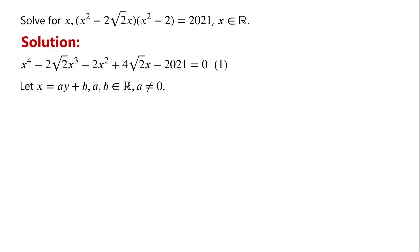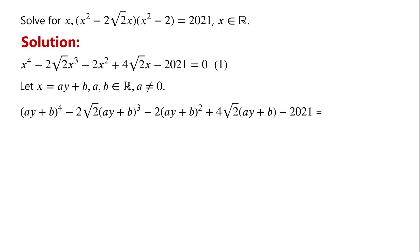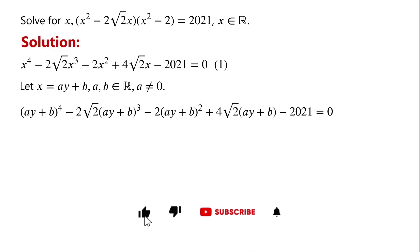Then equation 1 becomes: (ay + b)^4 minus 2√2 times (ay + b)^3 minus 2 times (ay + b)^2 plus 4√2 times (ay + b) minus 2021 equals zero.